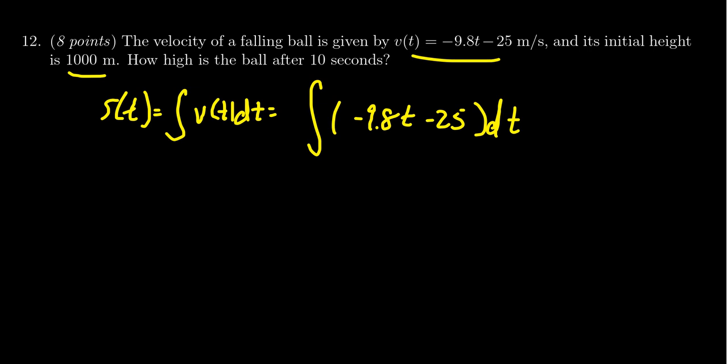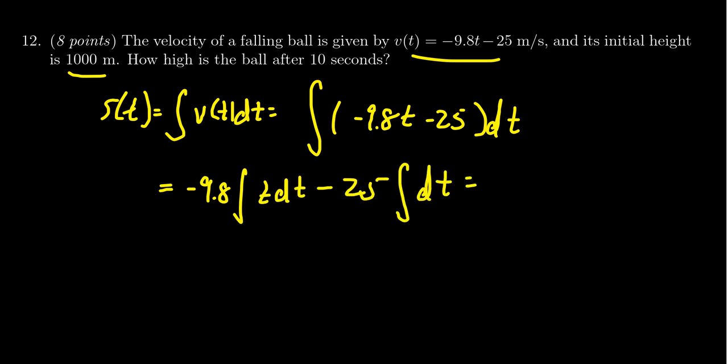We can calculate this using antiderivative properties that very much resemble derivative properties. We can break this over sums, we can factor out coefficients. We get -9.8 times the integral of t dt minus 25 times the integral of dt. The antiderivative of t is going to be t² over 2, and the antiderivative of 1 is just going to be t.